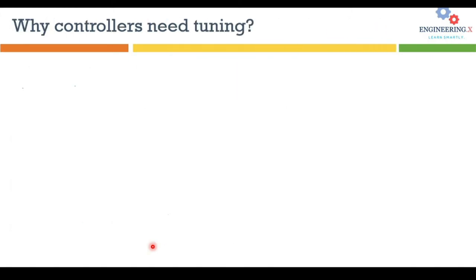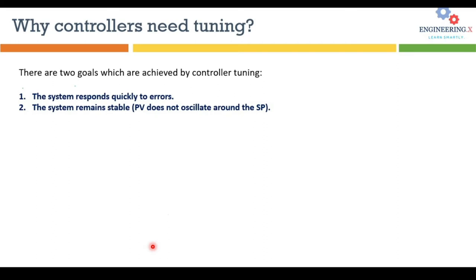Let's move to the next slide on why controllers need tuning. When tuning a controller, we seek two objectives: first, the system should respond as quickly as possible to bring the process variable back to the set point; and second, while achieving that fast response, the system must remain stable and the process variable should not oscillate around the set point.